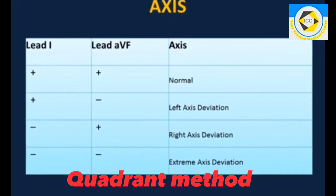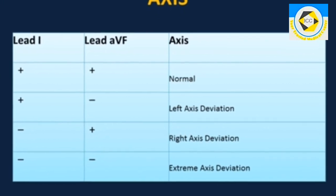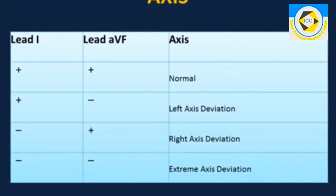Look at the QRS complex in lead 1 and AVF. If it is positive in both leads, axis is normal.